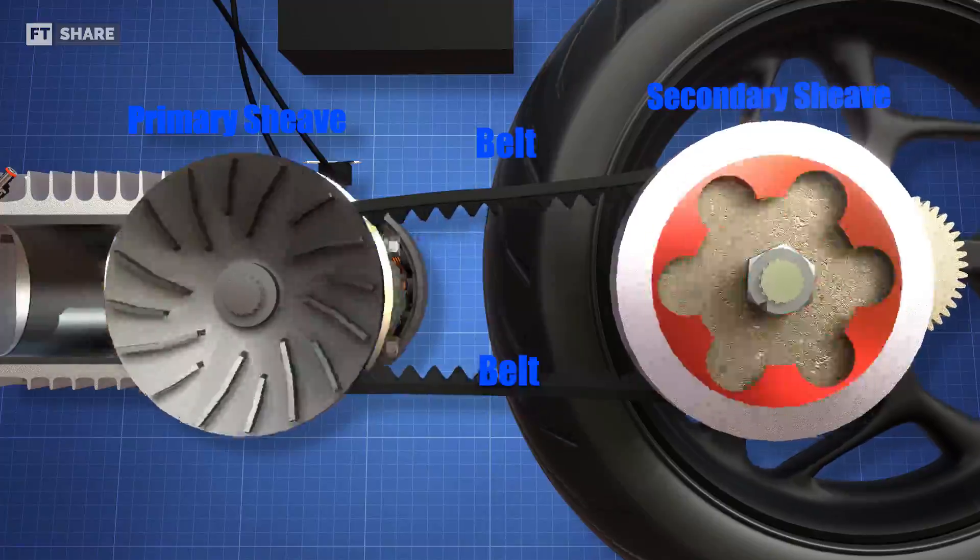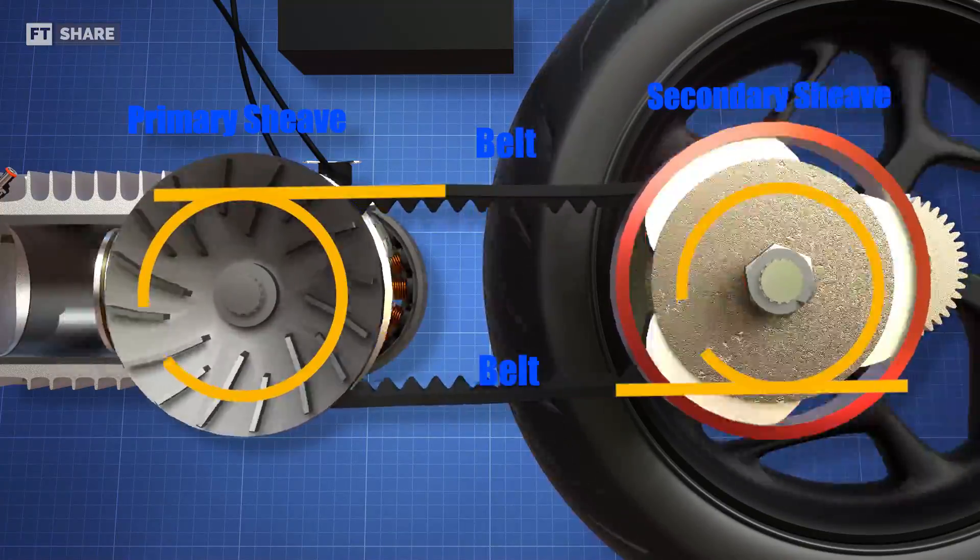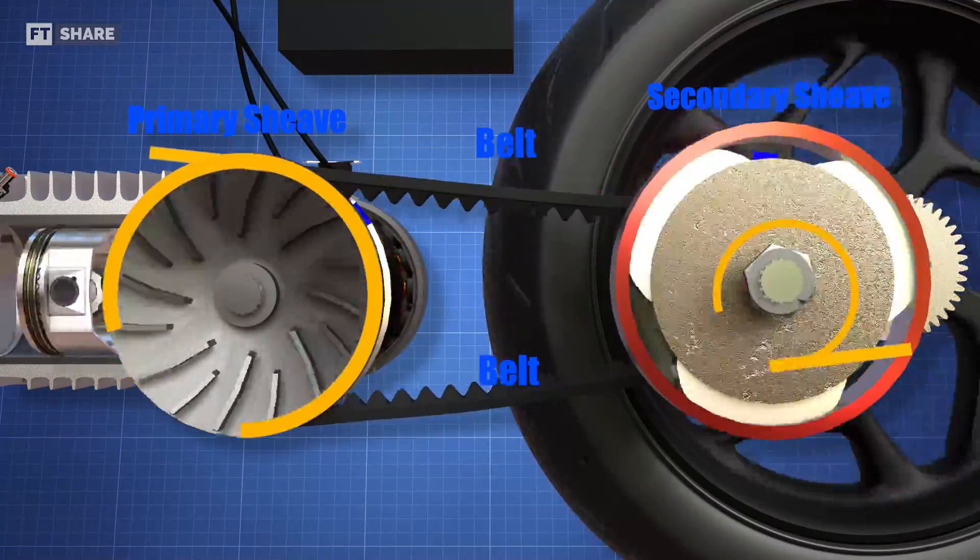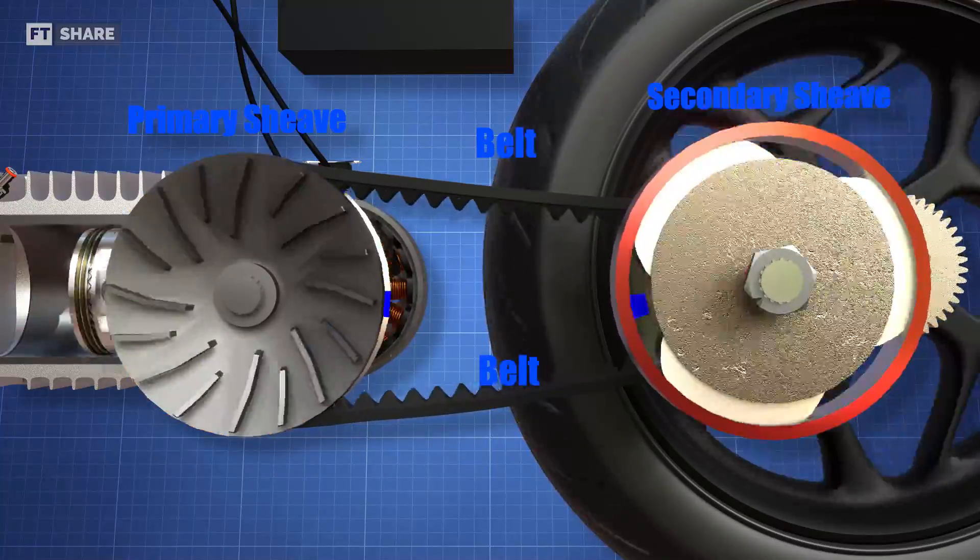Now, in order to achieve higher speed on the wheel side, the diameter of the primary sheave must be made smaller, and the diameter of the driven secondary sheave must be increased. Okay, let's understand how this is accomplished in a real scooter CVT.